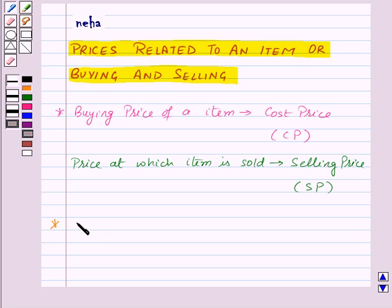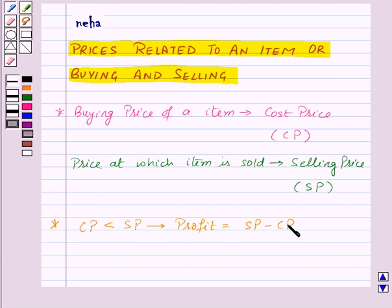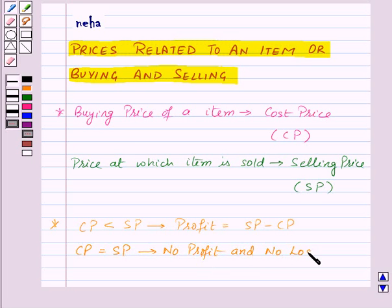Now, if cost price (CP) is less than the selling price (SP) of an item, then the shopkeeper makes a profit, and the profit is equal to selling price minus cost price. If cost price is equal to selling price, then there is no profit and no loss. And if cost price is greater than selling price, then the shopkeeper bears a loss, and the loss is equal to cost price minus selling price.